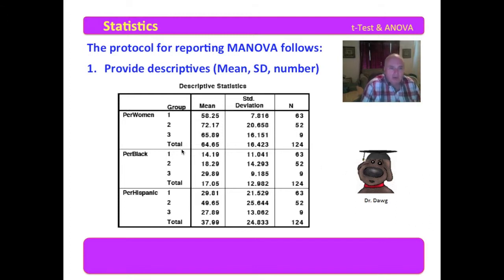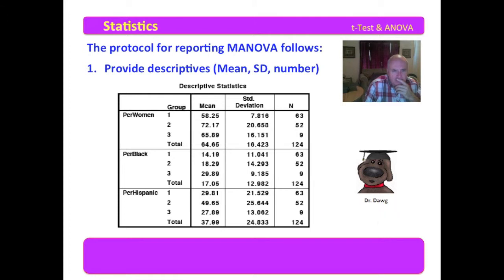Here you obviously have the percent of women, your total, and the means for each group; the percent of black enrollment and means for each group; and the percent of Hispanic enrollment and means for each group. Some of these descriptives are indeed very interesting — this one and this one are very, very interesting.